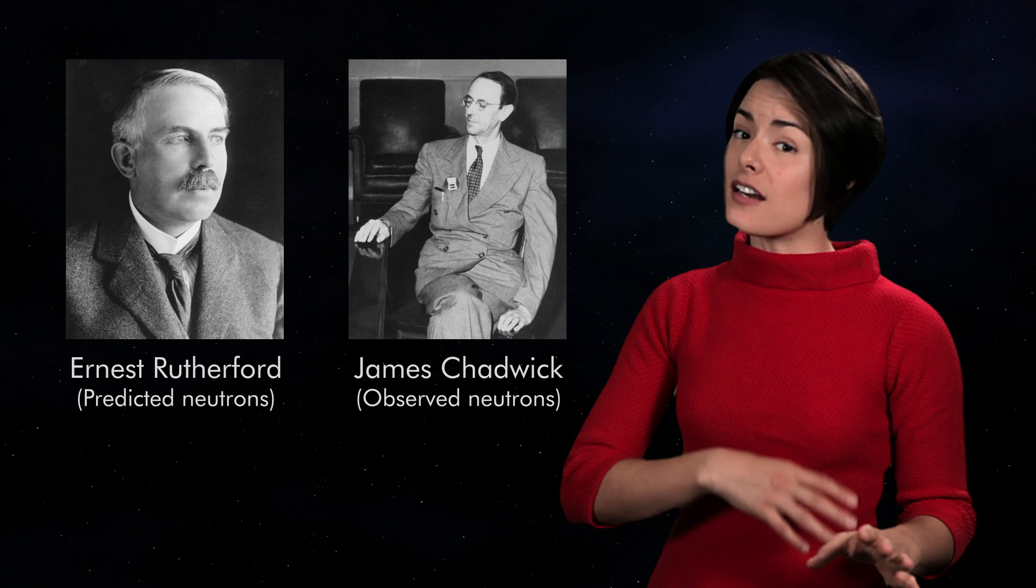In between white dwarfs and black holes are neutron stars. These stars are made primarily of neutrons, which are neutral particles. Ernest Rutherford predicted the existence of neutrons in 1920, and a dozen years later they were observed by James Chadwick. You can find neutrons in the nucleus of most atoms.